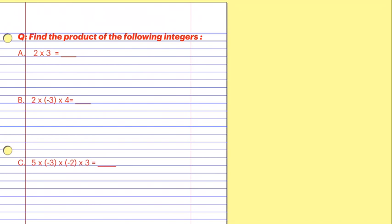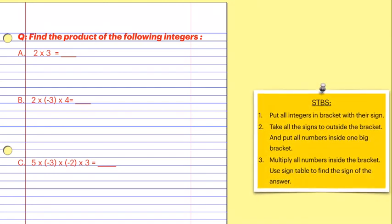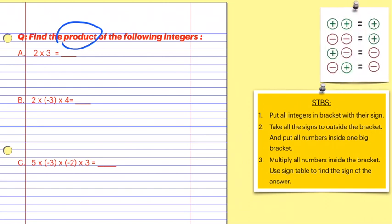We'll start with a few questions. I'll show you how to solve them one by one. These are the three steps to build skills for finding the product of integers. Product means multiplication. You do not use the number line here, but you do use the sign table. Step one: put all the integers in a bracket with their sign.